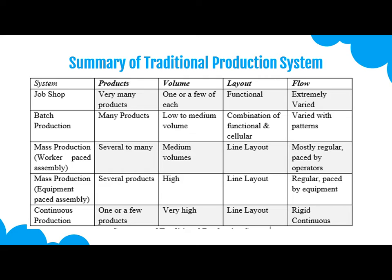In the case of job shop production, product volume is one or few of each, the layout is generally functional, and flow is extremely varied. In the case of batch production, there are many products with low or medium volume, a combination of functional and cellular layouts is used, and the flow is varied with patterns.